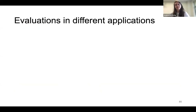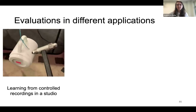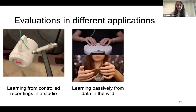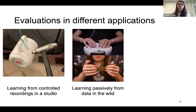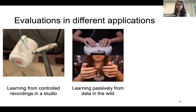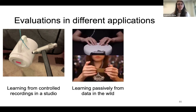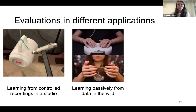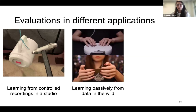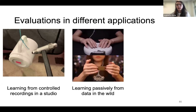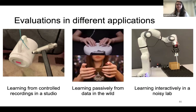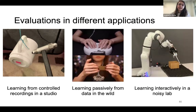We evaluate the model in three applications: first, learning from controlled studio recordings like existing model-based methods; second, a passive learning use case where DIFF-IMPACT outperforms deep learning methods, enabling a robot to learn acoustic models from data in the wild, such as ASMR YouTube videos; and third, an interactive learning example where DIFF-IMPACT equips a robot to learn separated acoustic models from noisy robotics lab recordings.